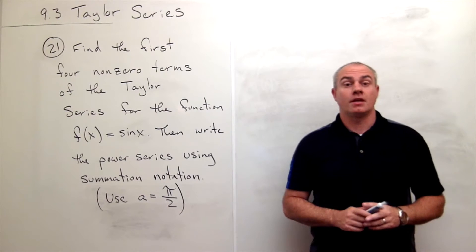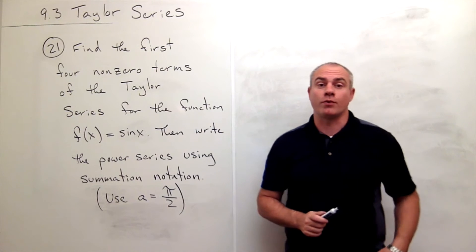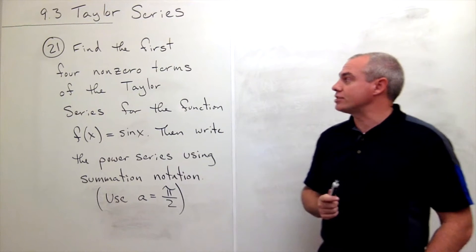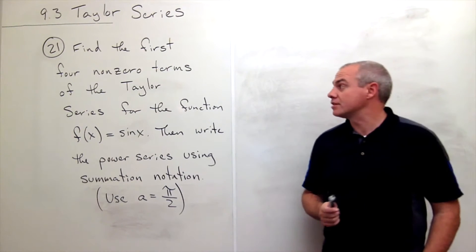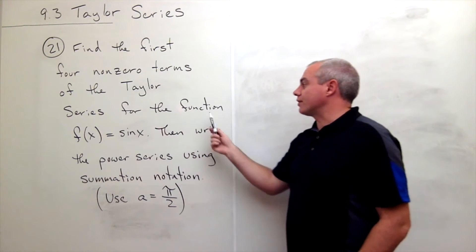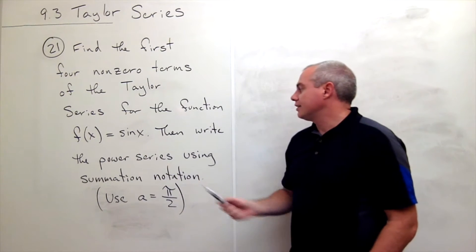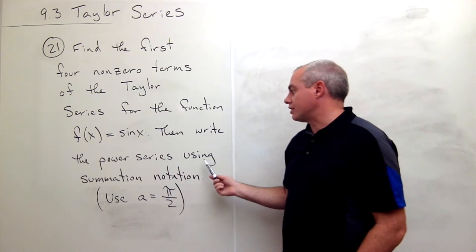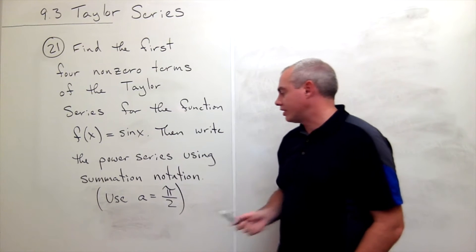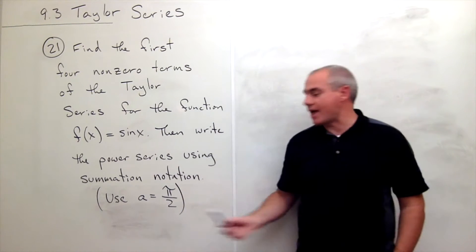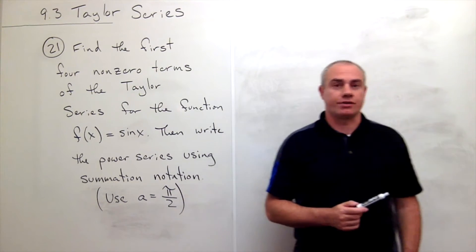I'm the calculus professor and today I'll be talking to you about Taylor series. In problem number 21, we'd like to find the first four nonzero terms of the Taylor series for the function f of x equals sine of x, then we'll write the power series using summation notation. In this case we're going to use that a is equal to pi over two.